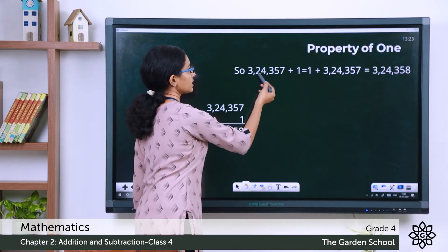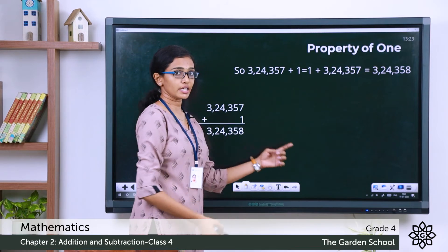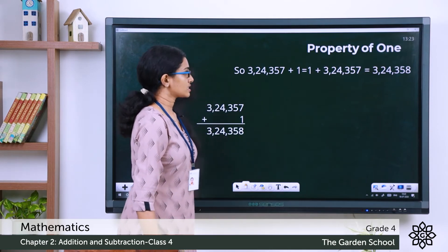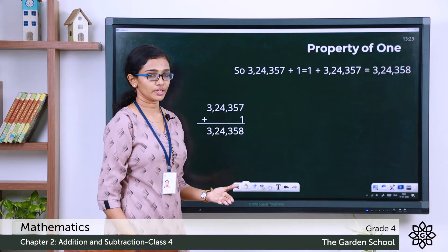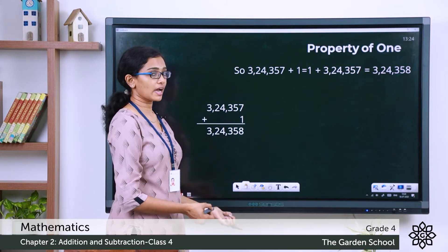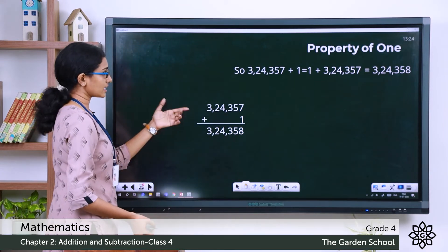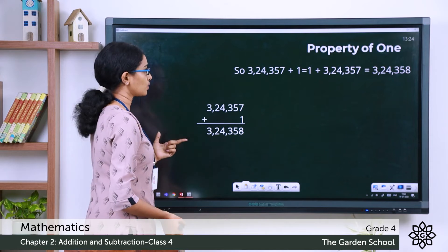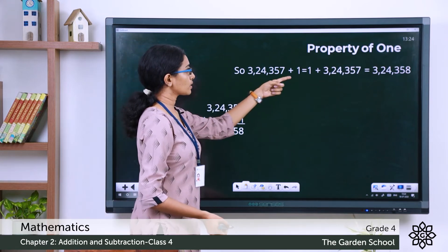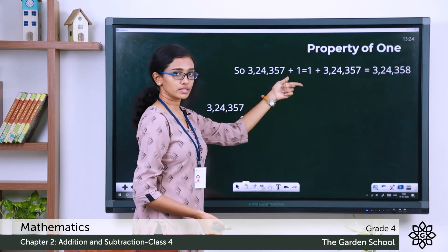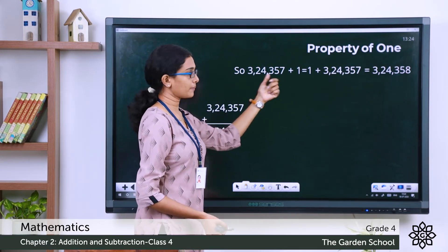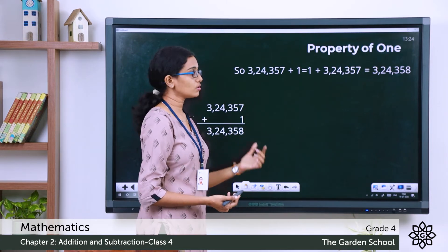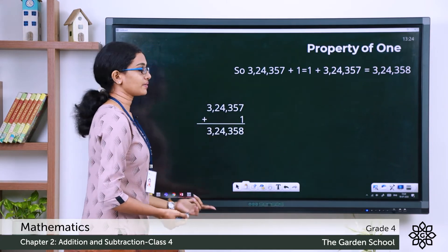Even if we write this number plus 1, it is equal to 1 plus this number according to the order property of add-ins. It's the same case with 0 also — even if you add 0 at the beginning or after the given number, or even if you change the order when adding 0, the sum will remain the same.